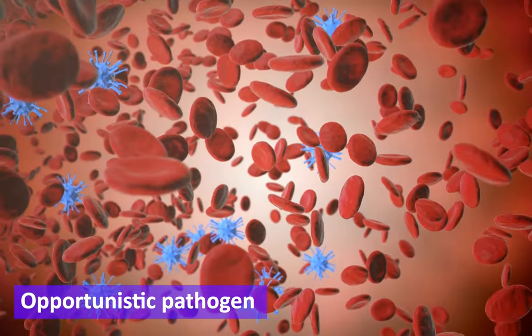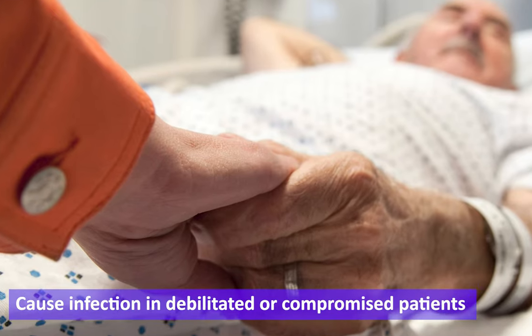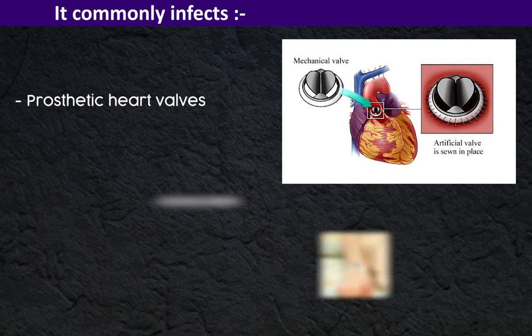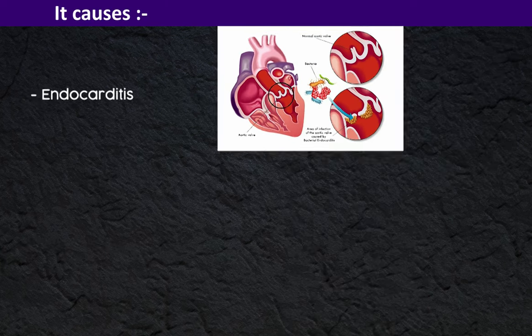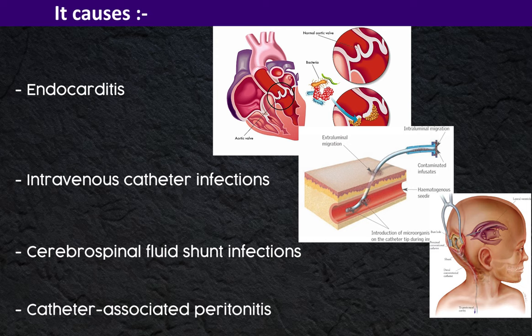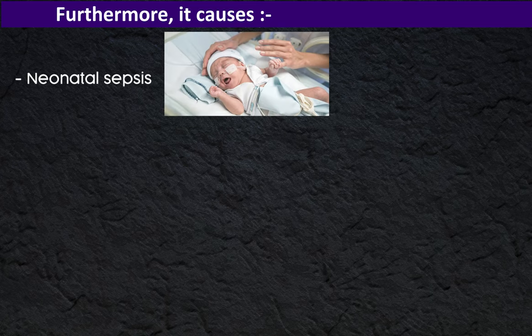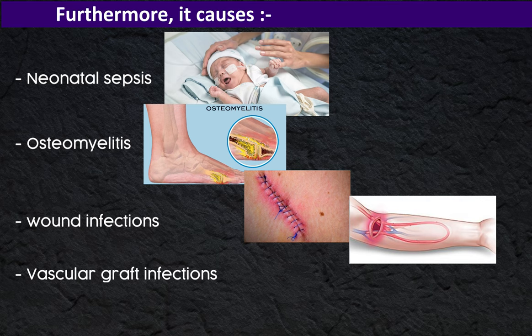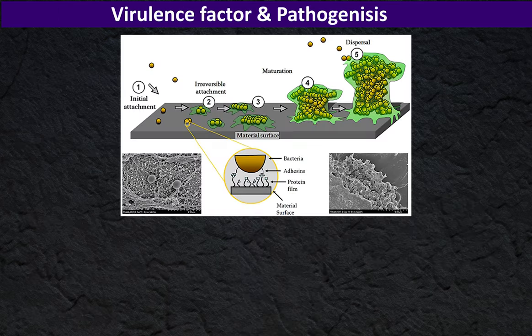S. epidermidis is an opportunistic pathogen that causes infection in debilitated or compromised patients at the site of implants. It commonly infects prosthetic heart valves, intravenous catheters, cerebrospinal fluid shunt infections, catheter-associated peritonitis, and endocarditis.